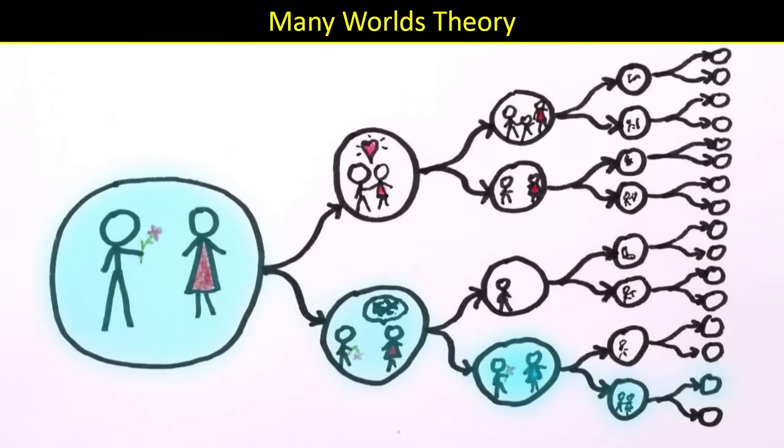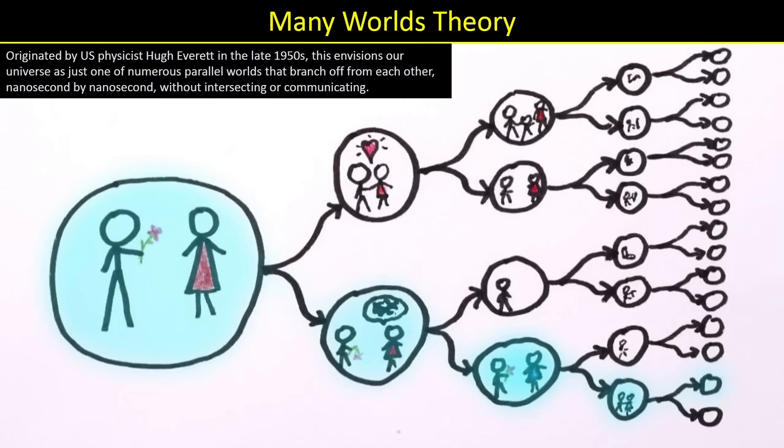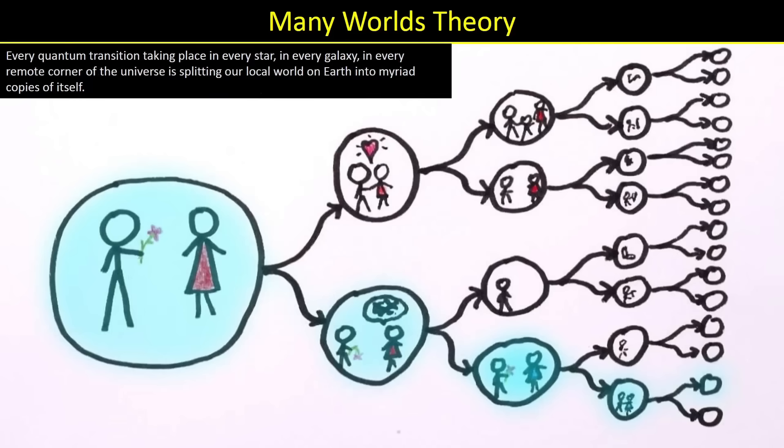The many worlds theory envisions that our universe is just one of numerous parallel worlds that branch off from each other nanosecond by nanosecond, without intersecting or communicating. Basically every quantum transition taking place in every star, in every galaxy, in every remote corner of the universe is splitting our local world on Earth into myriad copies of itself.